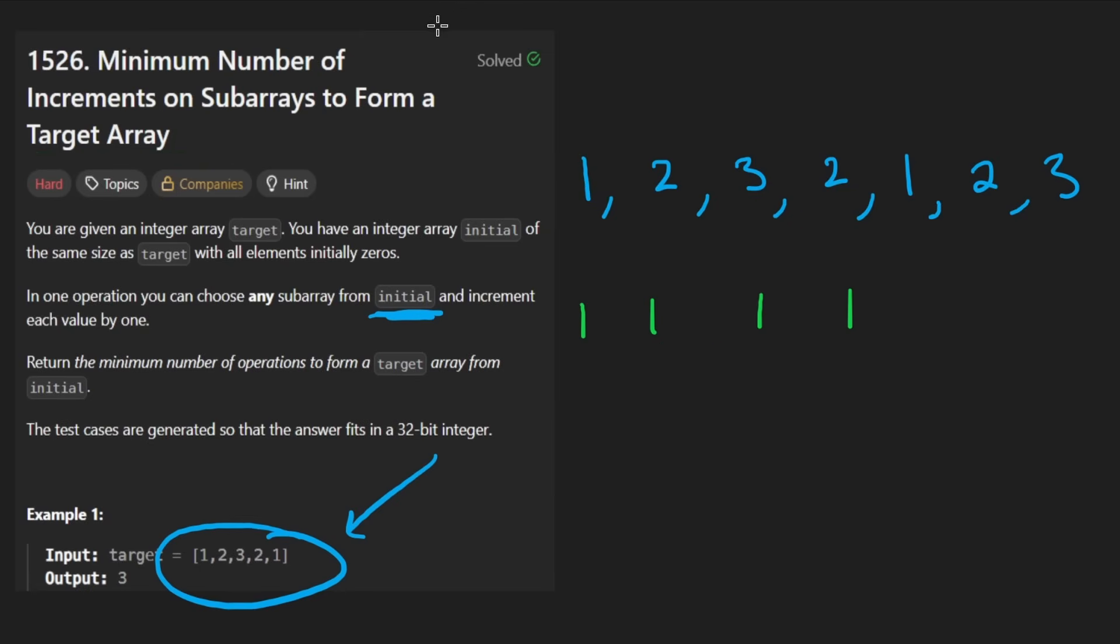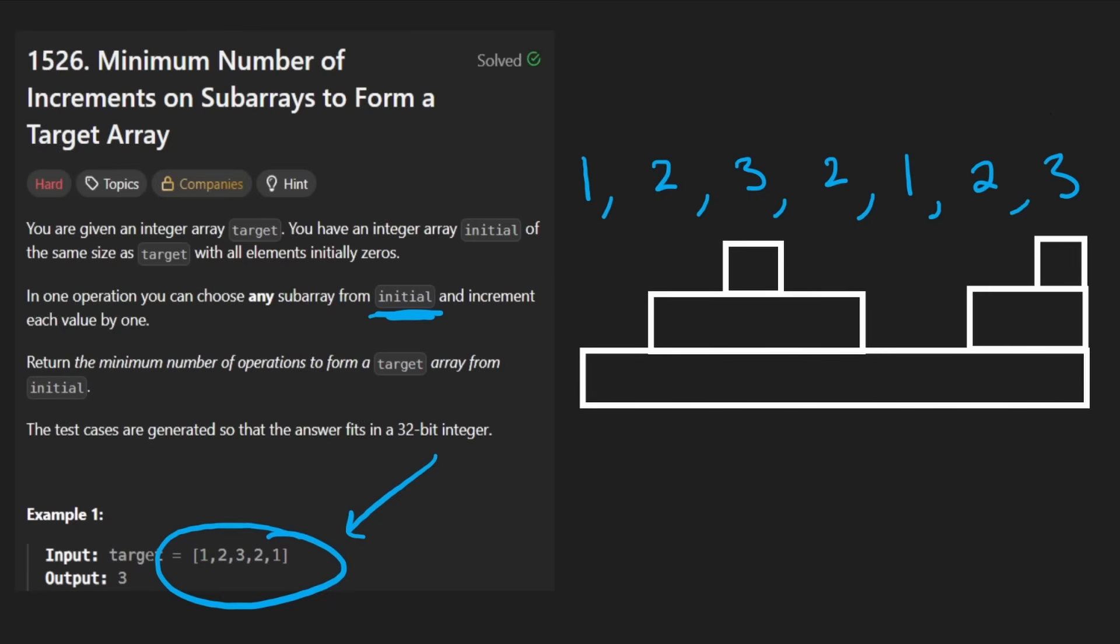But now for the greedy solution, to visualize it, it's kind of like this. Imagine we have like a mountain. So like this is one, this is two, this is three, and then this is two again. And so I'm kind of drawing it as like a bar graph. And it's not like the best drawing. So I apologize for that. But to simplify this, you see, it's like increasing, then it's decreasing.